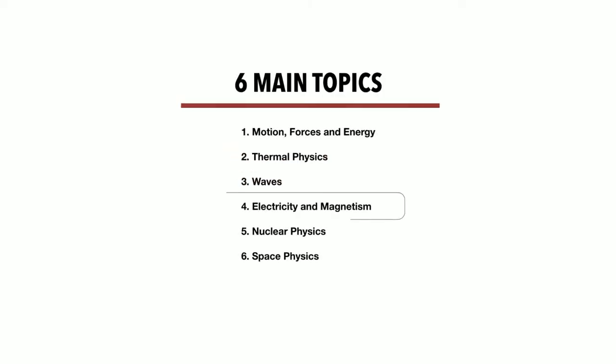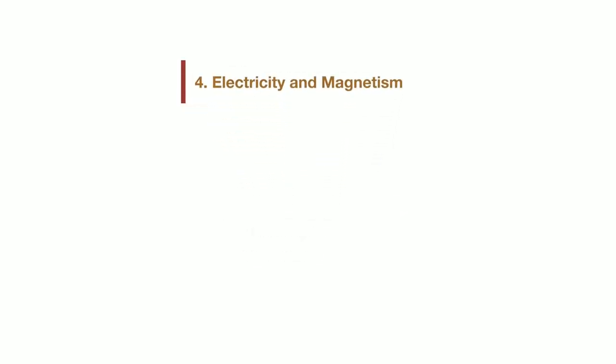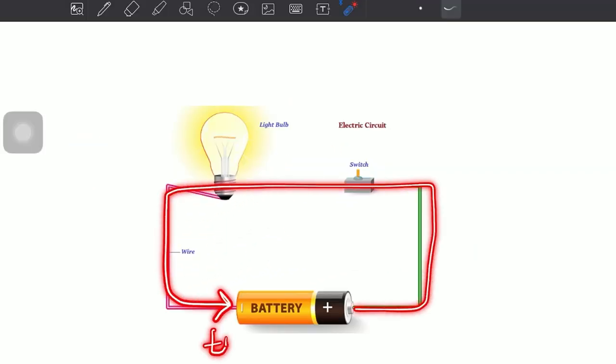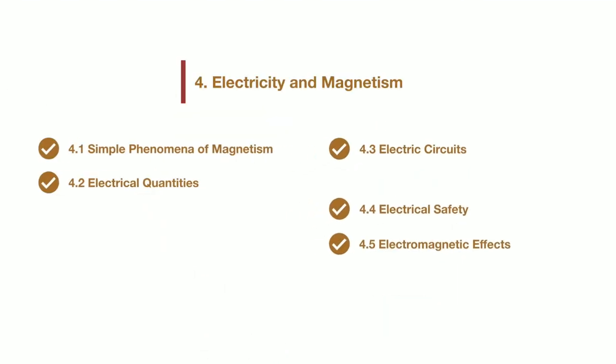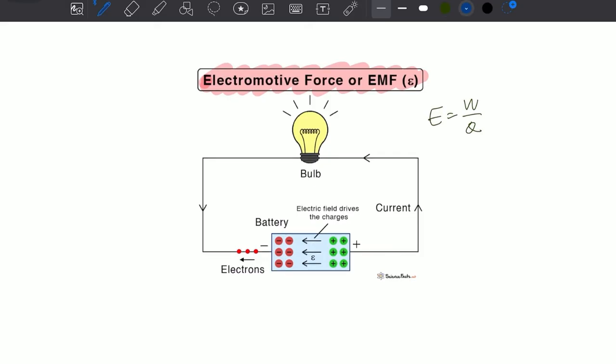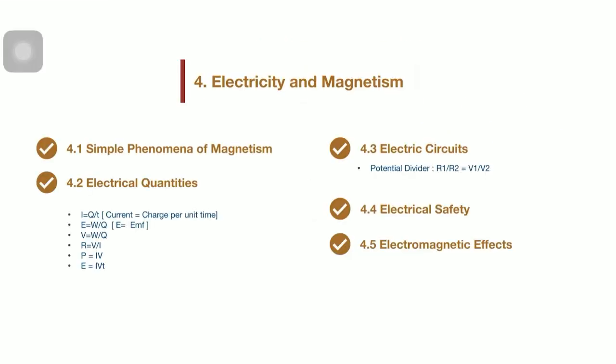Now we are going to explore the important formulas and equations that you need to know in chapter 4 of electricity and magnetism. Electric current is the flow of electric charge over time. The formula for electric current is I equals to Q over T. Next, electromotive force EMF. The formula E equals to W over Q represents the relationship between EMF work done and the charge Q transferred. So the formula R equals to voltage over current is used in order to find the resistance.